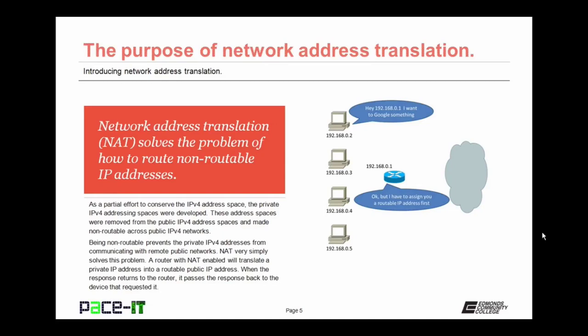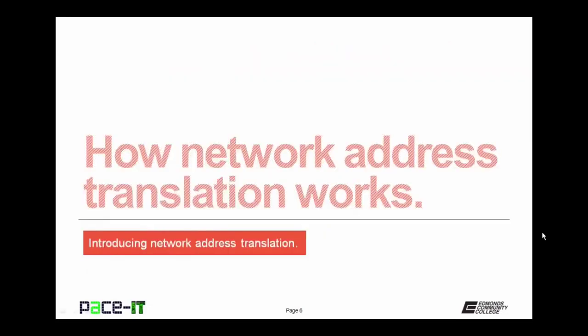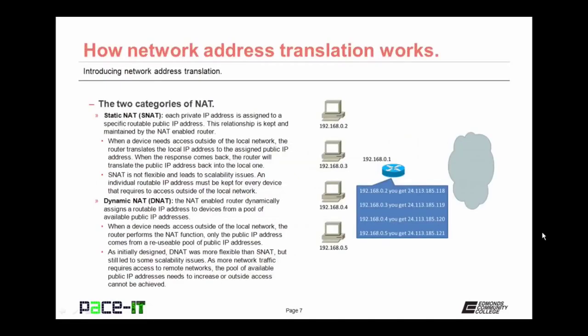A router with NAT enabled will translate a private IP address into a routable public IP address. When the response returns to the router, it passes the response back to the device that requested it. Now that we've covered the purpose, let's talk about how network address translation works. There are two categories of NAT — first up is static NAT.